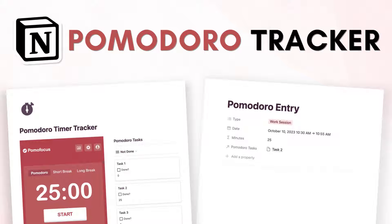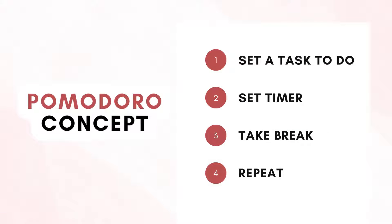Hi everyone and welcome back to the Organized Notebook. In this video we wanted to show you step by step how to build a Pomodoro timer tracker with Notion. If you're new to the Pomodoro technique, it's a system of time management where you break down your work into intervals, usually 25 minutes in length, separated by short breaks. This is a great system if you tend to lose focus or find it hard to start large tasks.